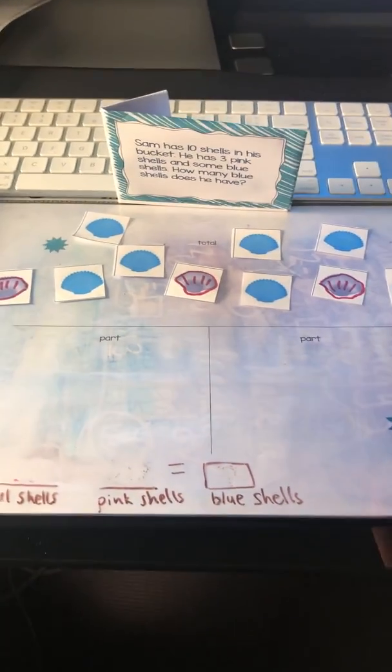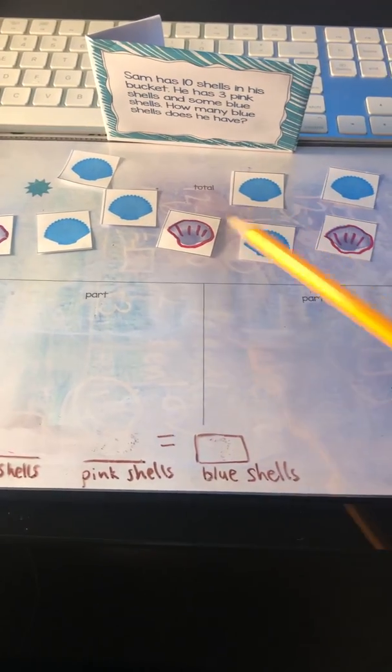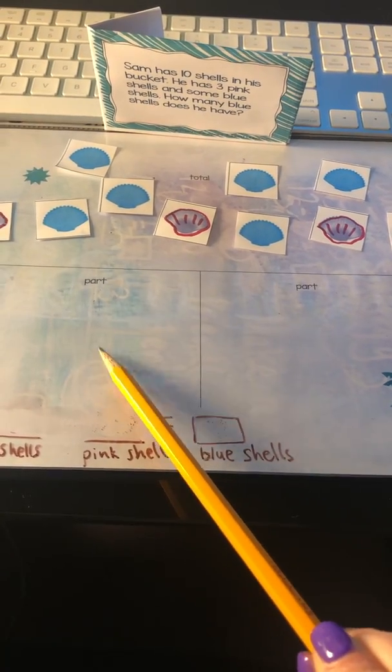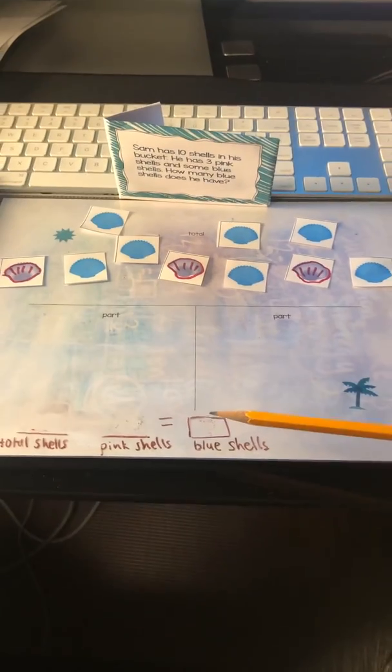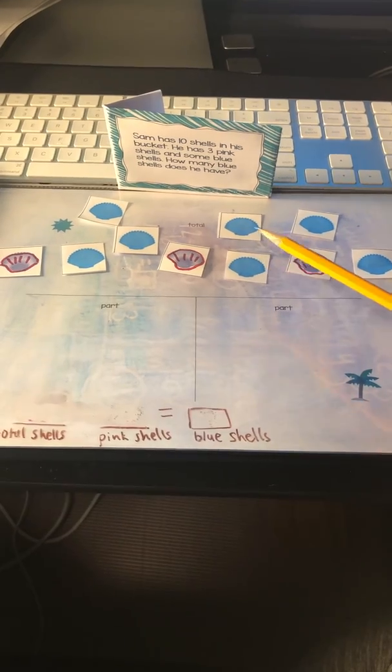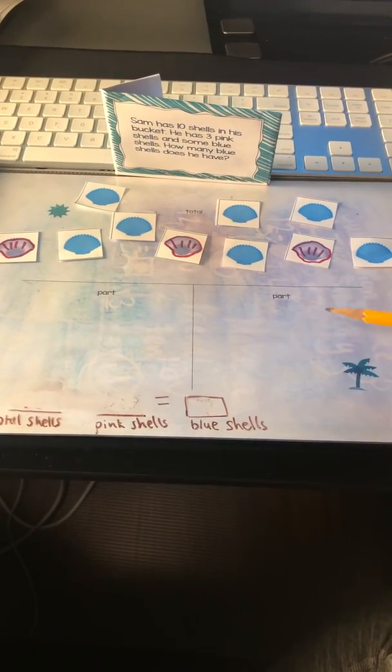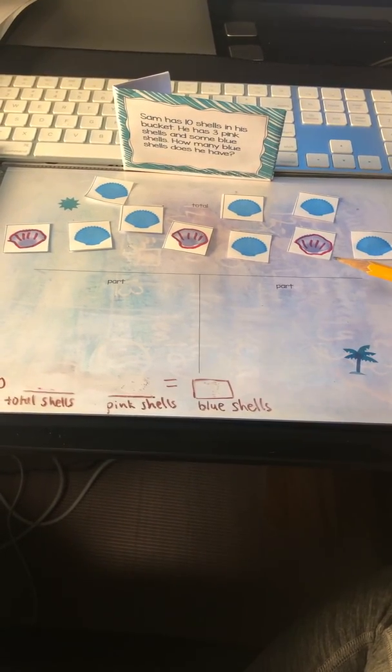Okay, I set up a mat here and you can do this just on a piece of paper. You can set up the top with your total and then divide the paper in half with two parts, draw another line right down the middle. Then I just cut out some pictures of objects, but you can use anything you have - if you have Cheerios or Legos, just something that you can count with in your house.